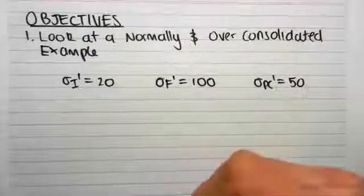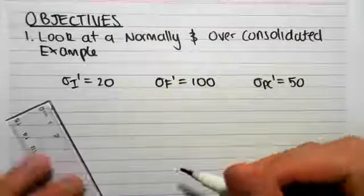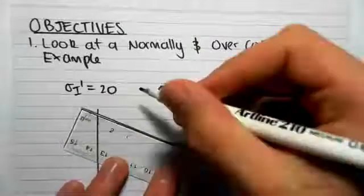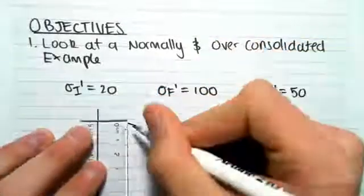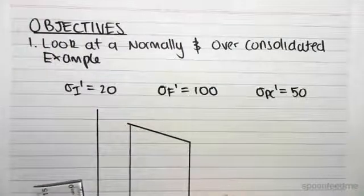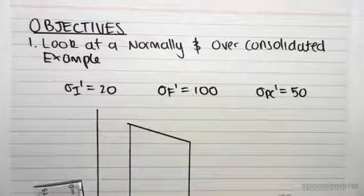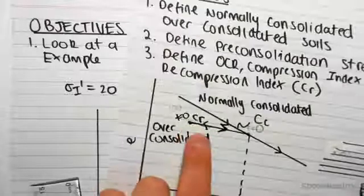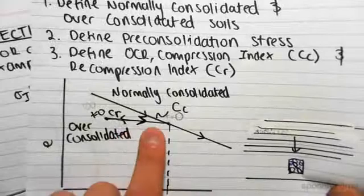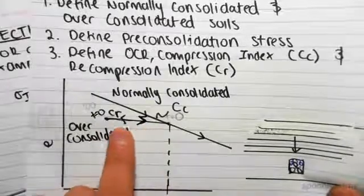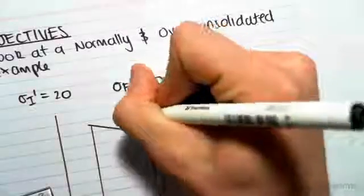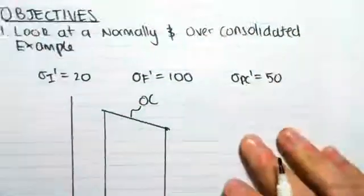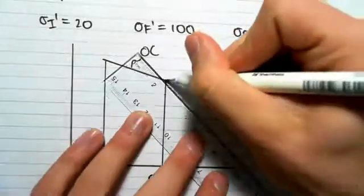So what that's going to do to our graph is from Sigma I to PC, so from here to here, Sigma I dash and Sigma PC dash, that is this branch here from our graph. So that is the over-consolidated branch, this is over-consolidated, and now we're going to go at our PC, at our Sigma PC, we're going to become normally consolidated.